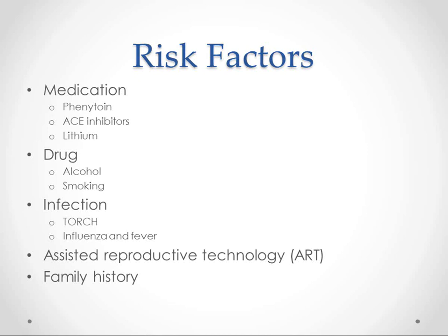The risk factors we often think of are phenytoin, ACE inhibitors, and lithium, alcohol, and smoking — which has a little bit weaker data — but certainly alcohol. Any infection that causes fever in the mother can also cause congenital heart defects, but more likely it's going to be caused by the TORCH infections. Assisted reproductive technology, as in in vitro fertilization, is also associated with heart defects, as is family history. Most of these are actually not going to be associated with any of these factors — they just kind of show up on their own. We don't know why.